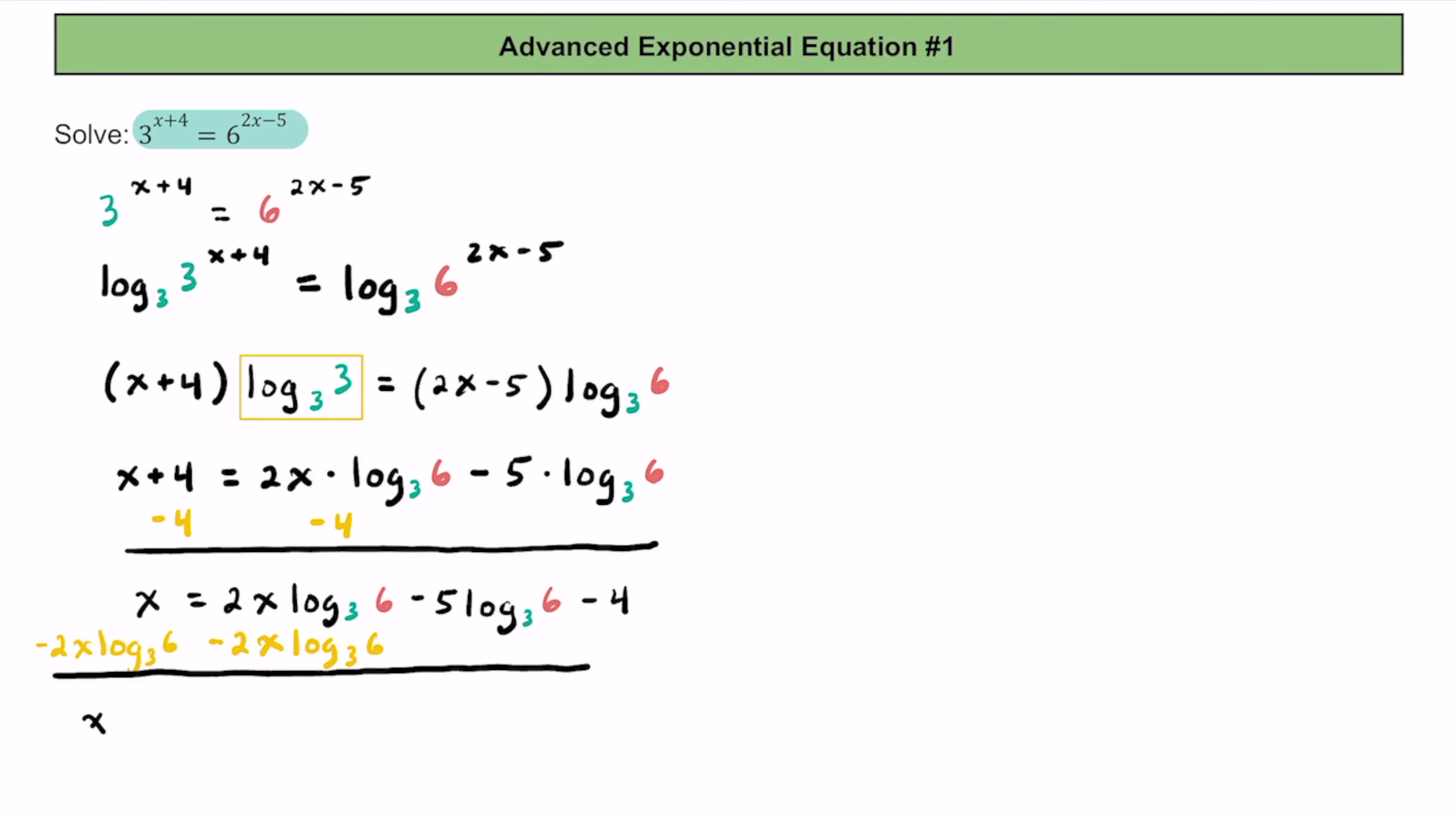In doing that, we're going to get x minus this 2x times log base 3 of 6. And then we have that equal to this negative 5 times log base 3 of 6 minus 4 on the right side.